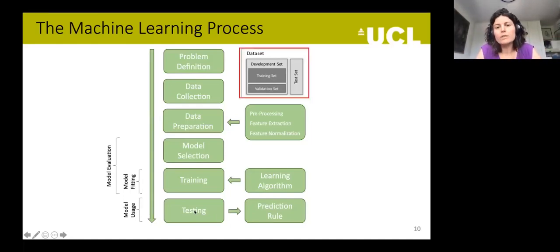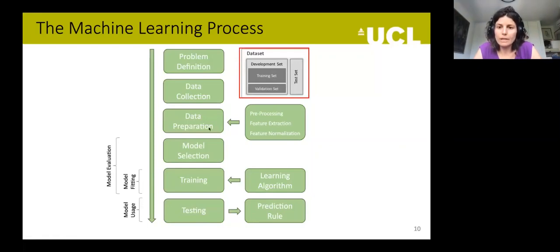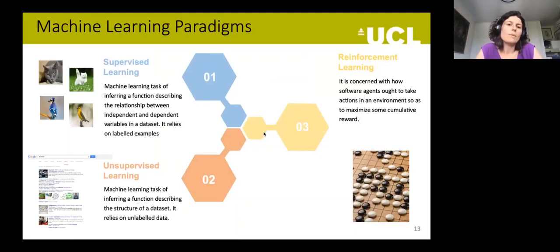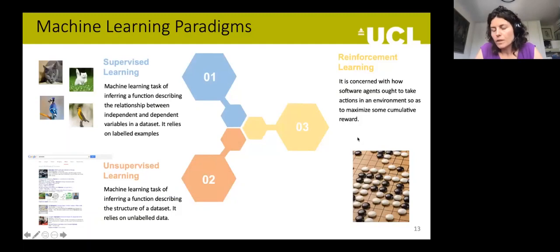I wanted to stress the importance of having data for training and separate data for testing and validation. An important distinction: which types of machine learning paradigms do we have? Machine learning could be supervised learning, unsupervised learning, and reinforcement learning. Today we're really focusing on reinforcement learning strategies.